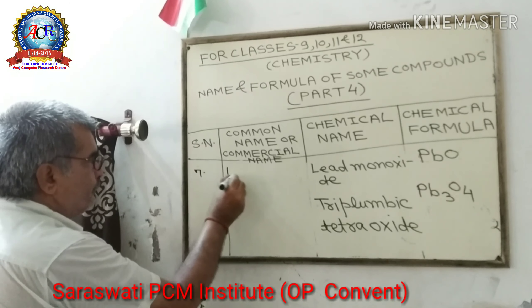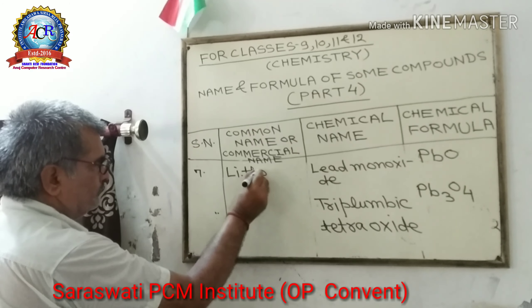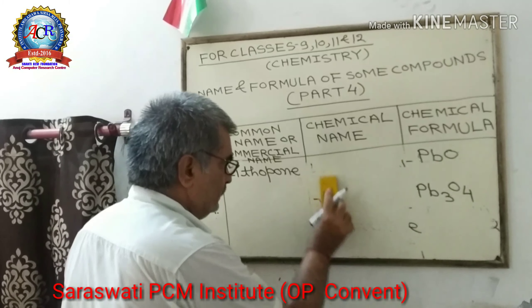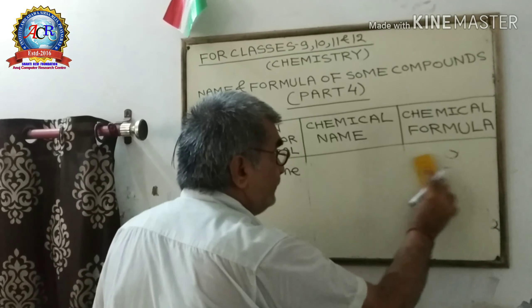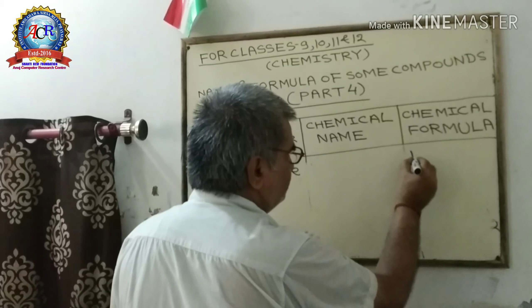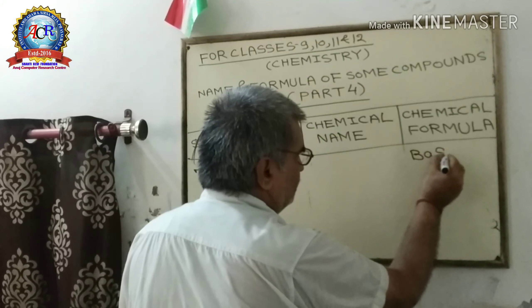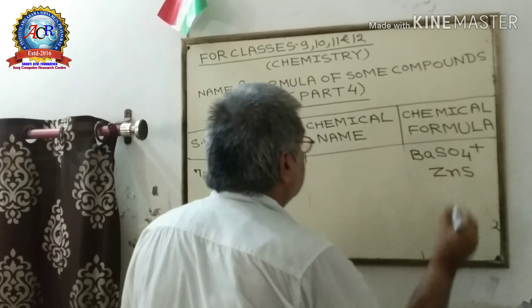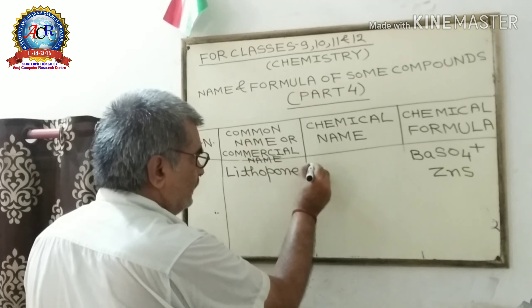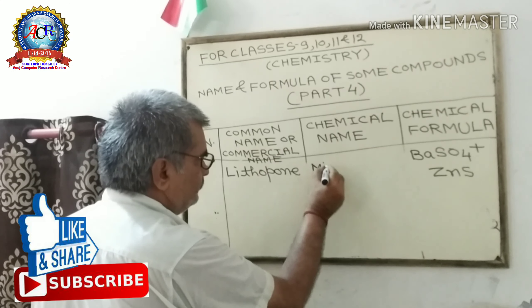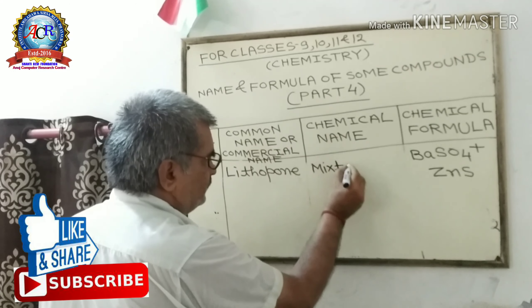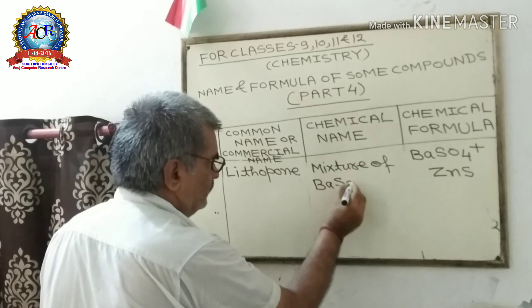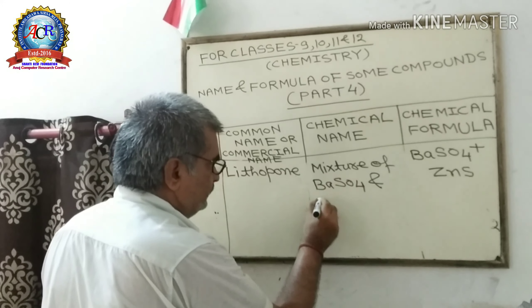Seventh: Lithopone. The chemical formula of Lithopone is BaSO₄ + ZnS. Its chemical name is Mixture of Barium Sulphate and Zinc Sulphide.